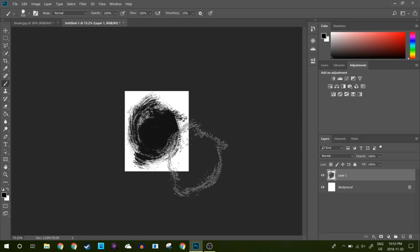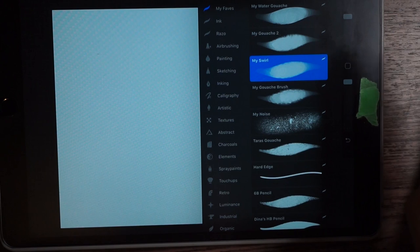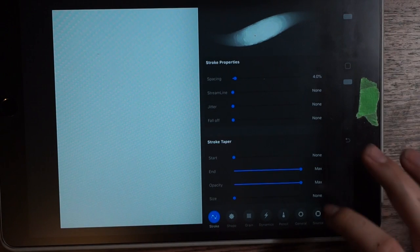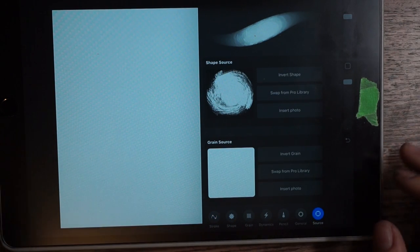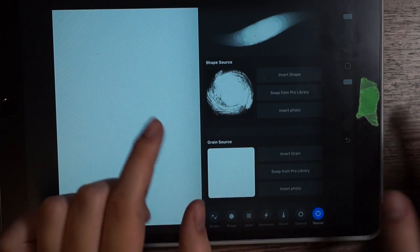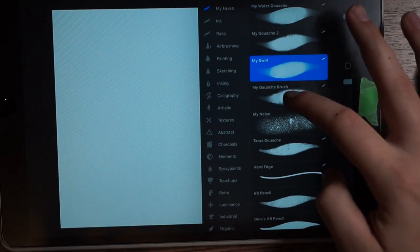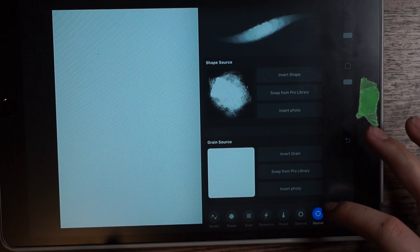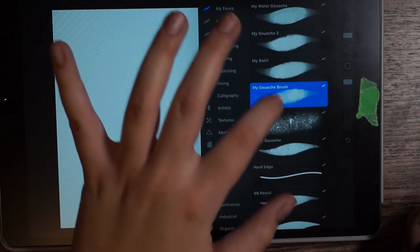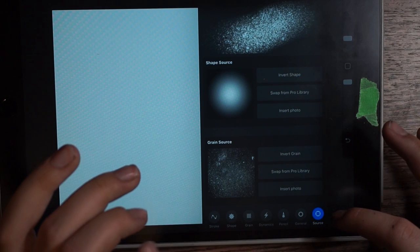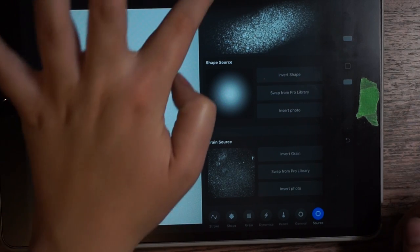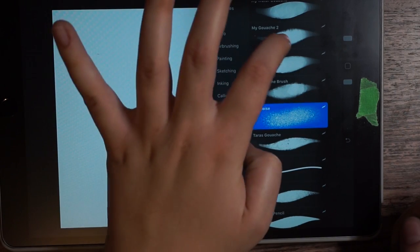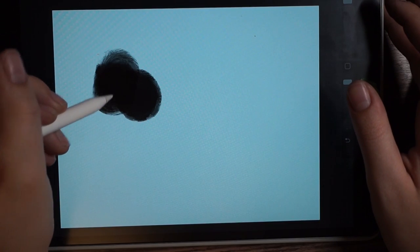In each brush, you can swap out the brush shape and the brush grain, so for most of them I just made the brush shape my own brush and I made the grain blank, but for the noise one I made the grain be the noise and I made the brush shape a soft brush, so it's like a soft noise brush. I kind of looked at the settings for a different brush and just swapped it out with my own texture.